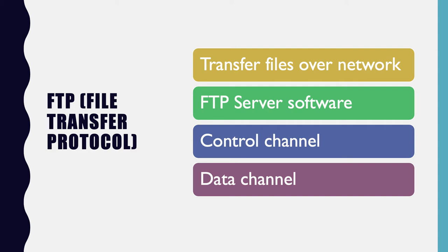The FTP server runs software to offer file services to its clients. FTP has two logical channels: the control channel, which uses port 22, and the data channel, which uses port 21. It establishes the control channel before sending data.